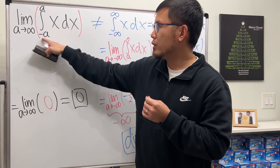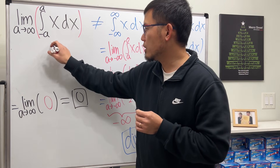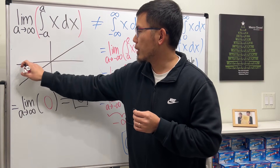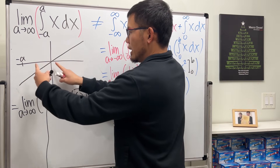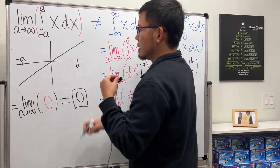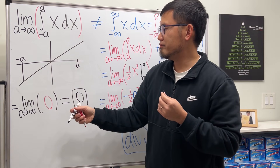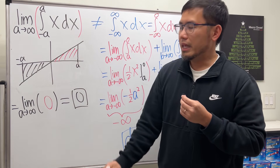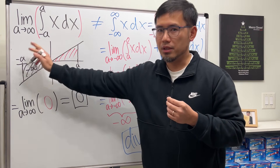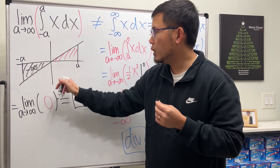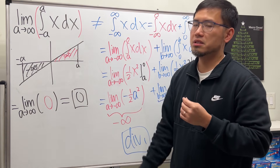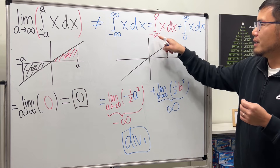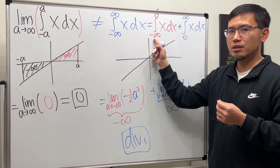Let me explain what's happening geometrically. When we go from negative a to a, it's symmetric. Looking at the graph of y = x, if a is some value, then negative a is on the other side. The area below the x-axis exactly cancels with the area above, so the result is zero — that negative infinity and positive infinity cancel completely.